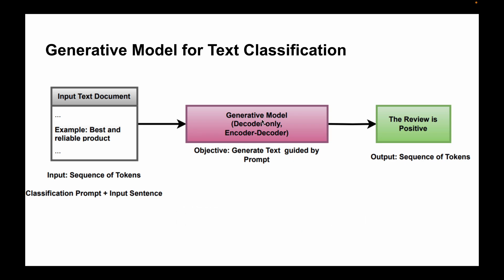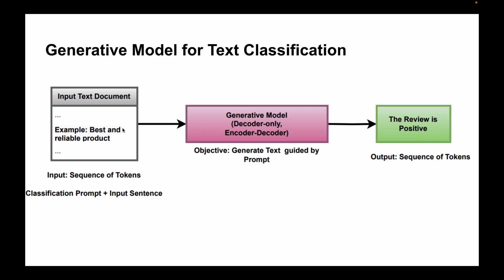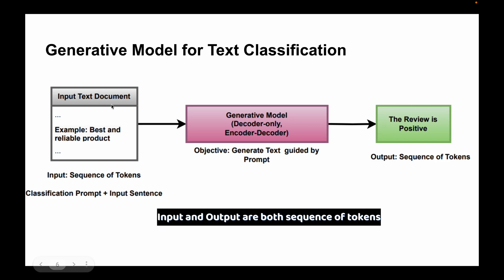We have to guide this model. Guiding is done through prompting. We give instructions to the model like 'classify this text into positive or negative.' After giving this instruction or prompt, the generative model generates a sequence of tokens. The input is a sequence of tokens and the output is also a sequence of tokens. The main challenge is how we write the instruction or prompt.